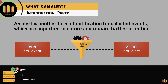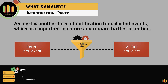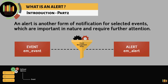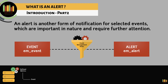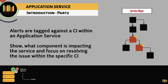Another important term within event management is an alert. An alert is another form of notification for selected events which are important in nature and require further retention. Not every single event requires an alert to be generated. Alerts are generated through event management rules.